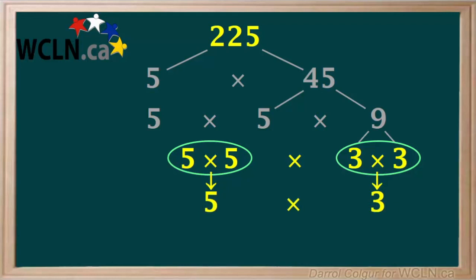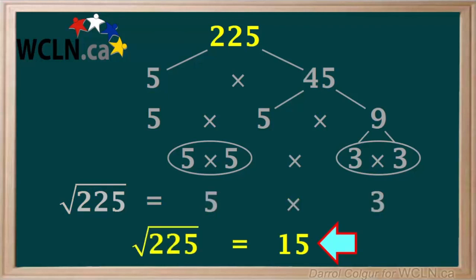5 is the square root of 5 times 5, and 3 is the square root of 3 times 3. So we can state that the square root of 225 is 5 times 3. 5 times 3 is 15. So the square root of 225 is equal to 15.